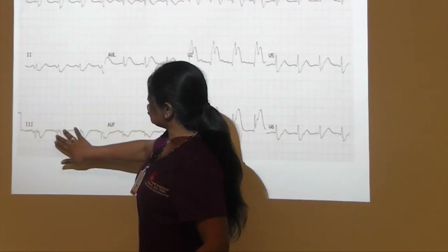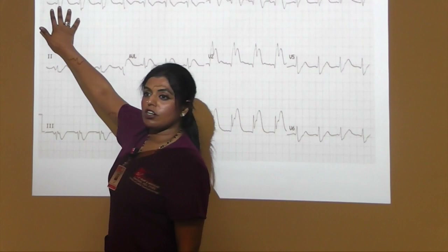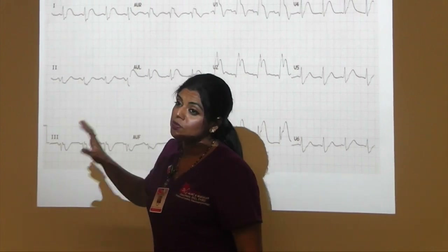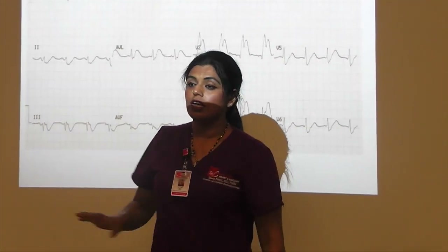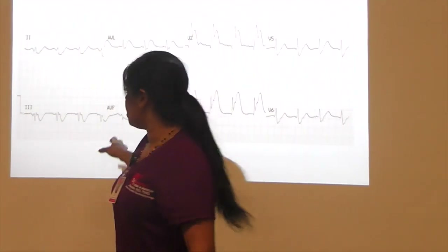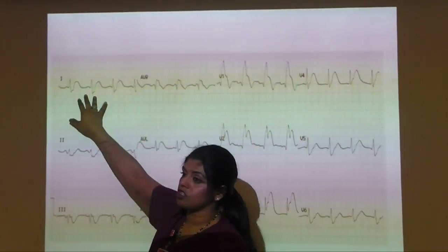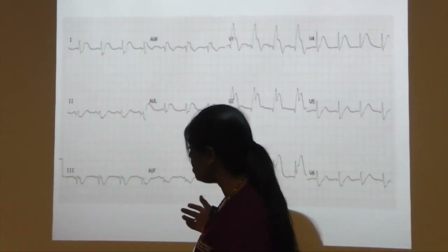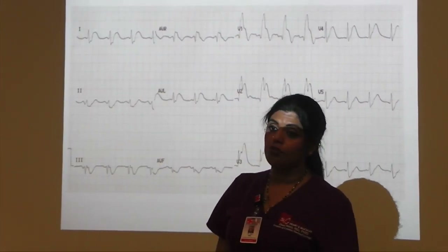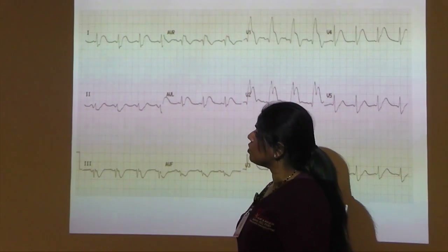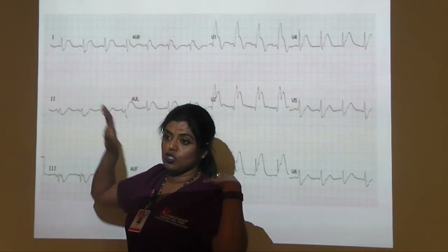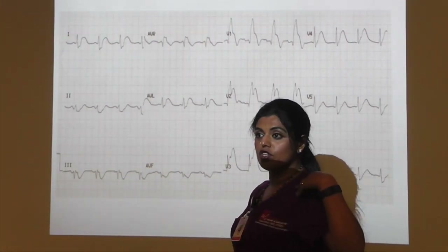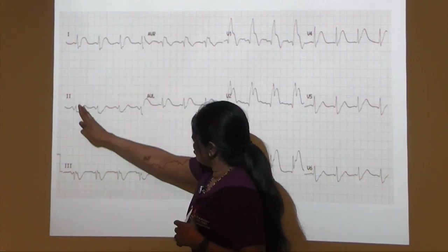If there is ST elevation in 2, 3, AVF, you will see ST depression in 1 and AVL — those are your reciprocal changes. If you don't see ST depression in 1 and AVL, it's unlikely you have ST elevation in the inferior leads. Conversely, if there's severe ST depression in 1 and AVL, look harder in the inferior leads for subtle ST elevation. If you have ST elevation in the lateral leads, you'll see ST depression in the inferior leads as reciprocal changes.